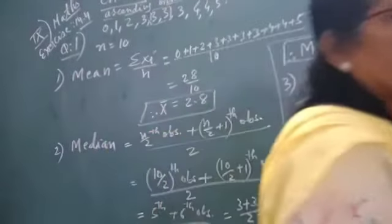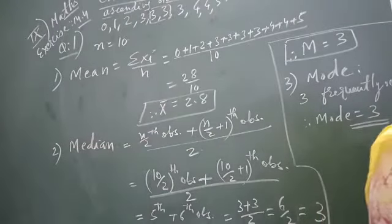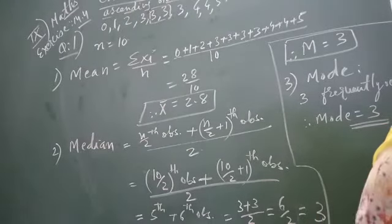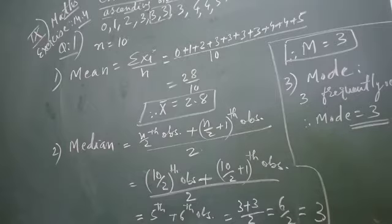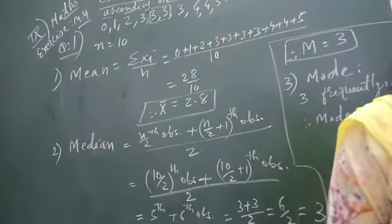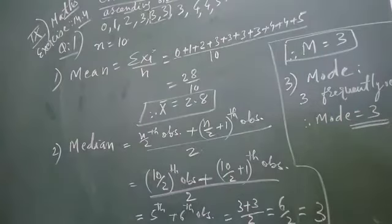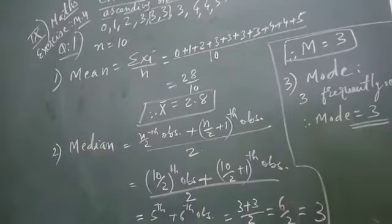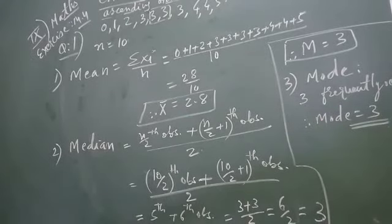Got it? Now same type of question is given in question number 2. So you have to do this question yourself. Same formula you have to apply, and three things you have to find: mean, median, and mode. But here the number of observations is odd. So we apply the formula for odd number to find the median.